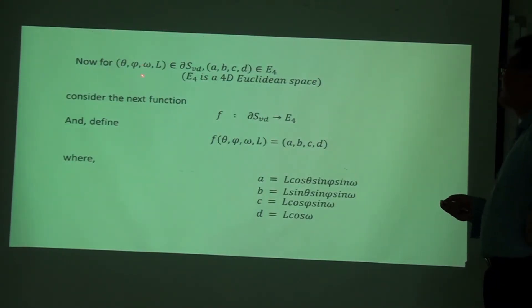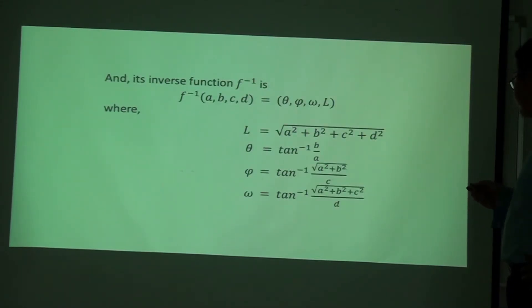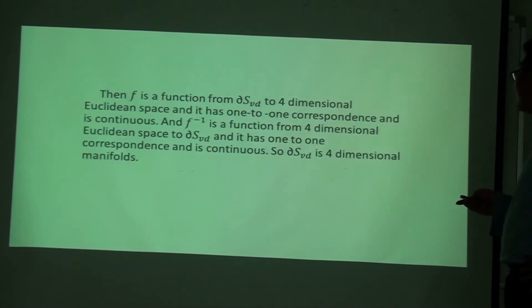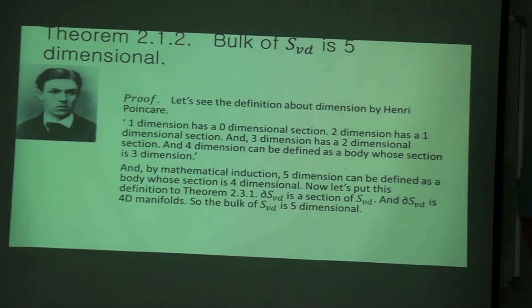I will show one function which is one-to-one correspondence and continuous. Within this function, ∂S3_vd should be homeomorphic with previous space. And its inverse function should be like this. These are bijection and continuous. So we proved that ∂S3_vd is four-dimensional manifold.